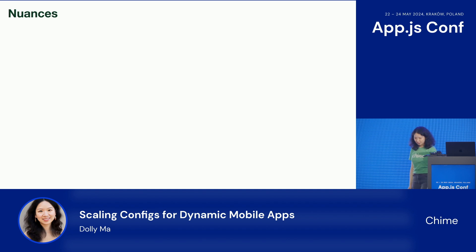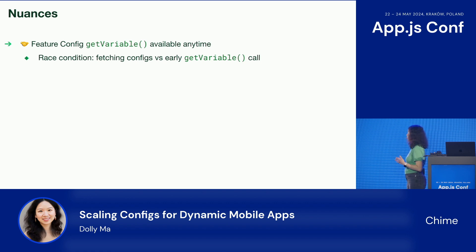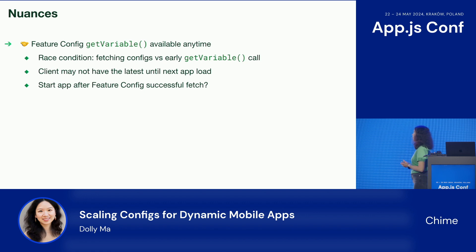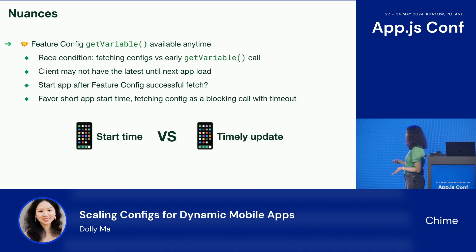Here are a few nuances when building it. We promised that feature config get variable would be available anytime. But there is actually a race condition between fetching configs versus a very early get variable call close to app launch. When the fetch happens later, the client may not have the latest value until the next app load. We considered blocking app start until a successful fetch, but this is a trade-off between app start time and timely client-side updates. We favor start time, so we still fetch the config as a blocking call but with a timeout — meaning the client may not always have the latest value if the call is made very early.